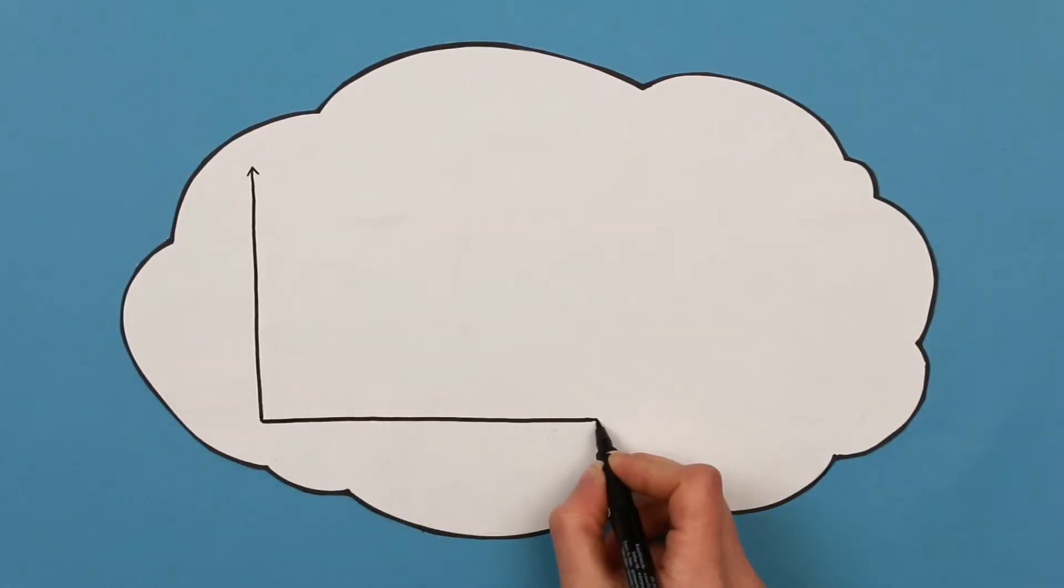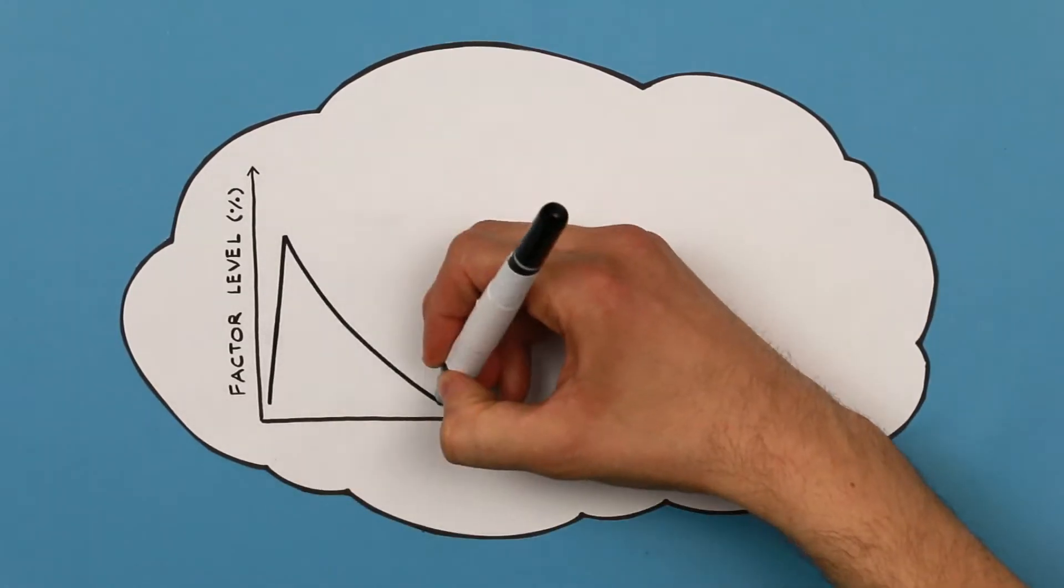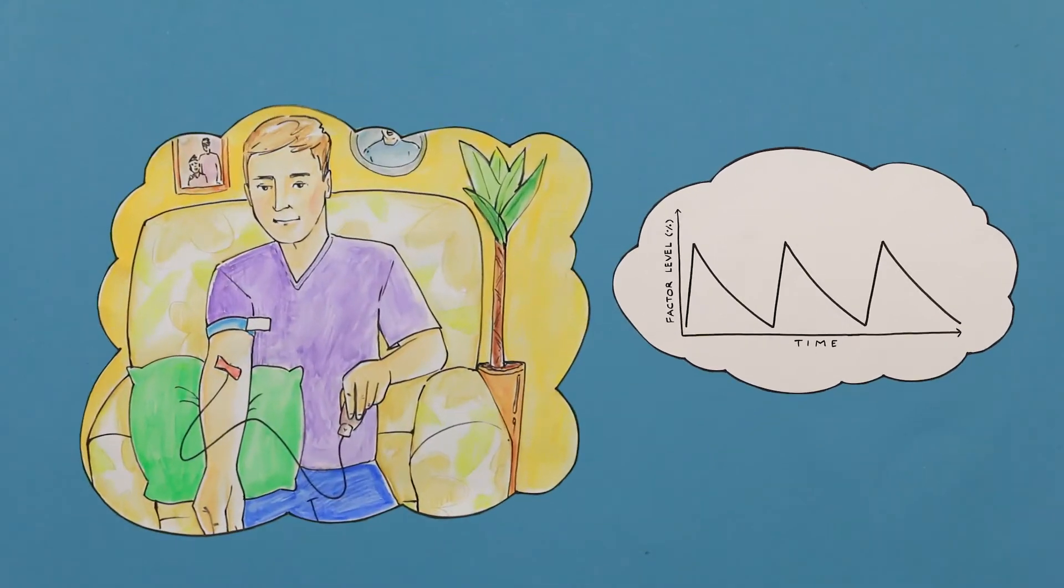The aim of prophylaxis is to prevent bleeds by increasing the level of factor 8 if you have haemophilia A or factor 9 if you have haemophilia B.